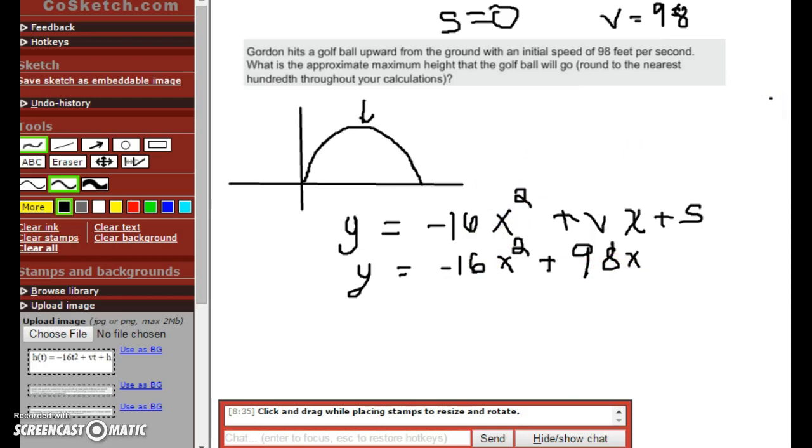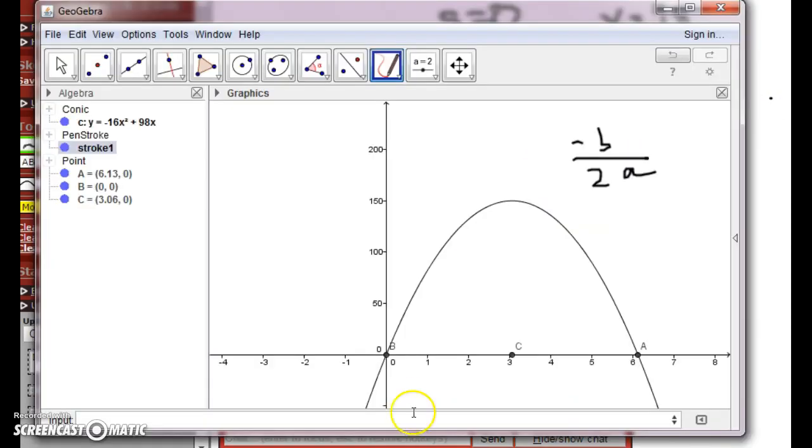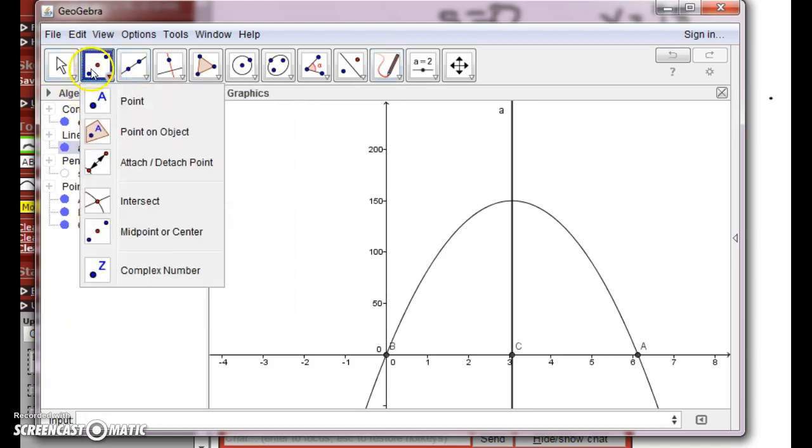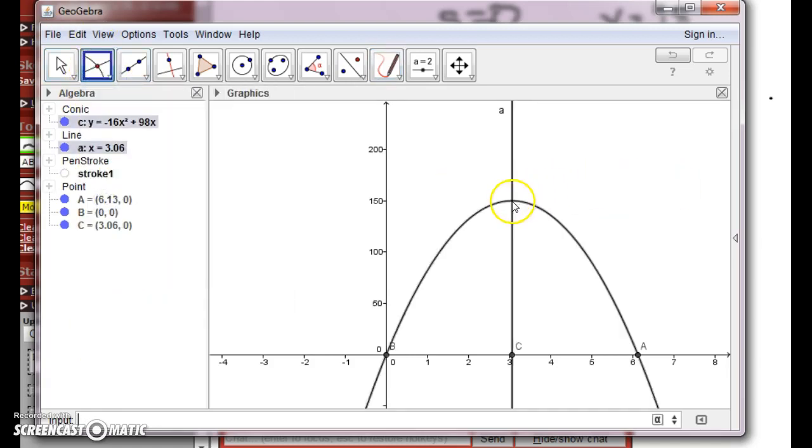And so what we're going to do is the midpoint is 3.06. So we write down x = 3.06. And where this intersects, there is an intersection tool, and that is the maximum height. So 150.06 feet is your answer for this.